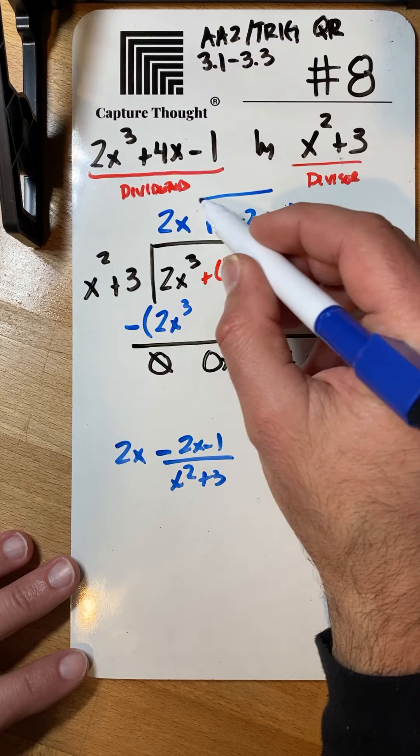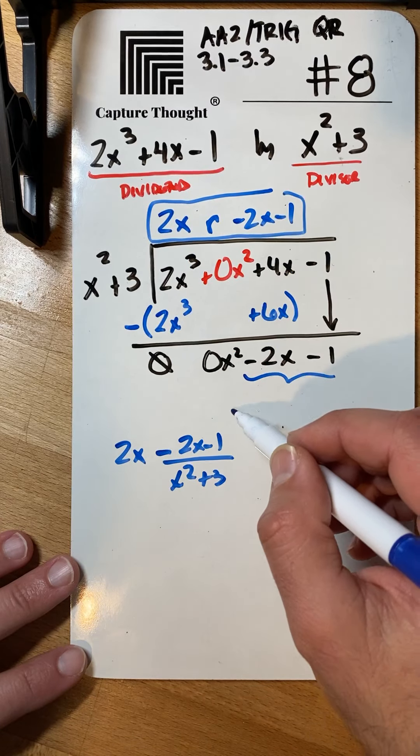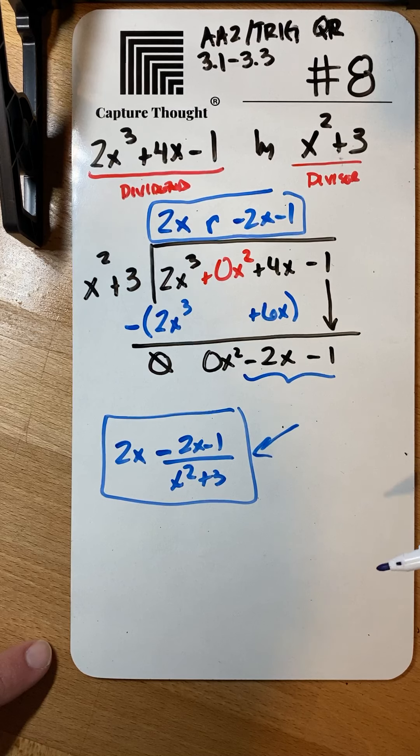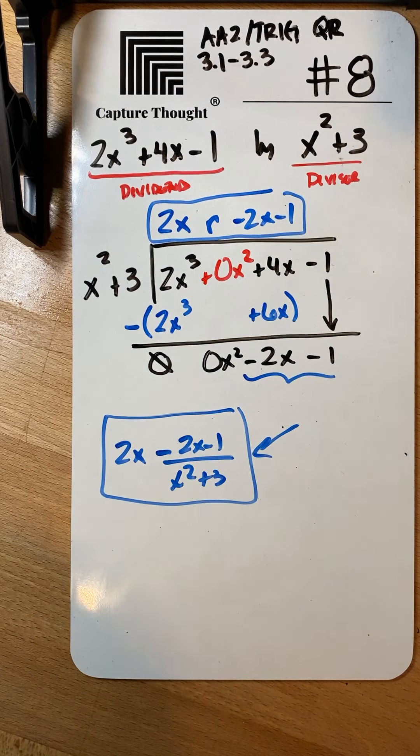So either one of these will be fine. If you write it on the test, you can leave it like this, or you can leave it like this. But if you're doing your homework and checking, the book will probably give you this answer and you're not doing anything wrong. Okay, that's how you do number eight.